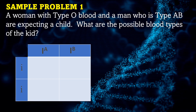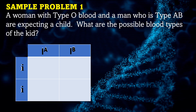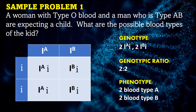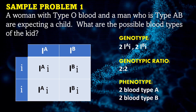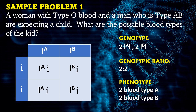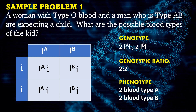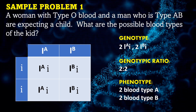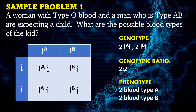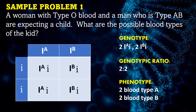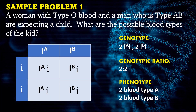We're going to do the Punnett Square. As a result, the genotype is 2 heterozygous blood type A and 2 heterozygous blood type B. The genotypic ratio is 2 to 2. For the phenotype, they can have 2 blood type A and 2 blood type B.